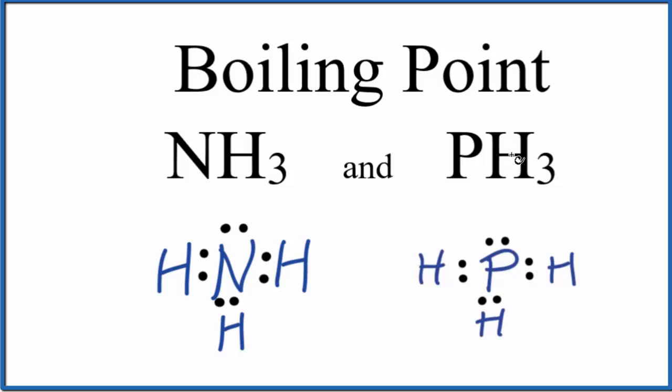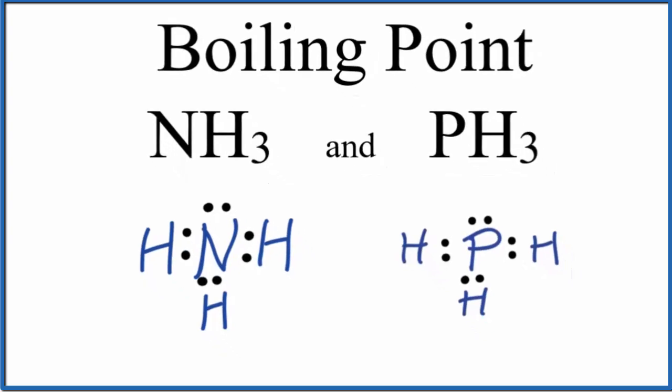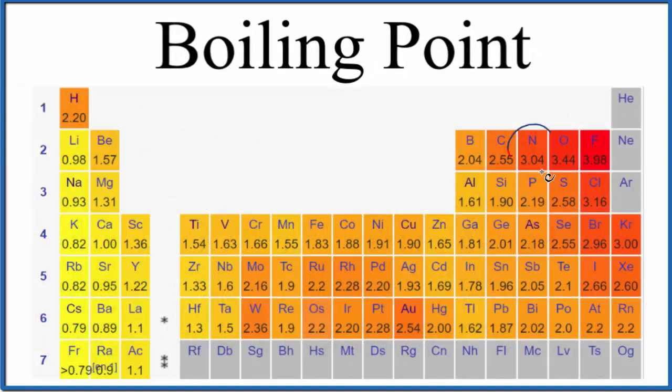So the big difference, though, is the electronegativity of the nitrogen compared to the phosphorus. Let's take a look at the periodic table. So here's nitrogen at 3.04, right below it, phosphorus, 2.19. Nitrogen is much more electronegative.